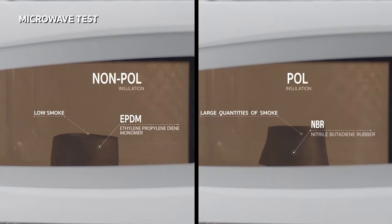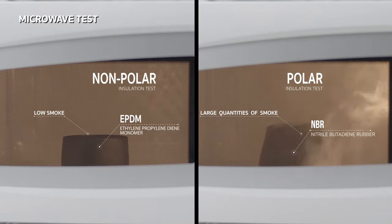Polarity test can simply be done by using a microwave because it uses the principle of electromagnetic wave to cause vibration within the polar substance in order to adjust the molecules according to the electromagnetic field. The vibration causes heat, smoke, or even flame in the polar substance, whereas the non-polar EPDM remains unchanged and unaffected by the electromagnetic wave.